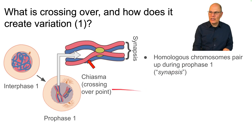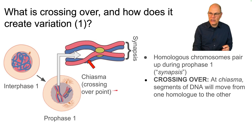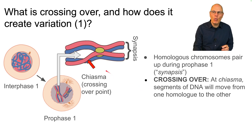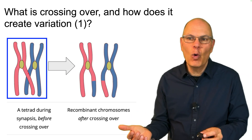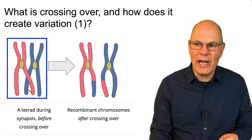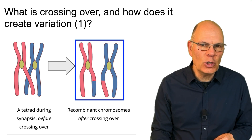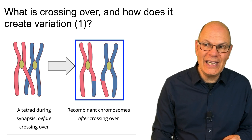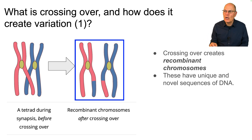When those homologous pairs pair up during prophase one, they don't only embrace — they embrace in such an intense way that they actually exchange parts. This embrace is called synapsis. At a point called a chiasma, segments of DNA move from one homolog to the other. The result: you start with an array of four sister chromatids called a tetrad. After crossing over, what was a purely maternal chromosome becomes a maternal chromosome with a paternal piece inserted, and vice versa. Crossing over creates what's called recombinant chromosomes, which have unique and novel sequences of DNA.